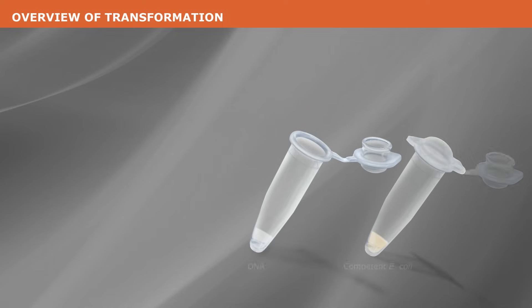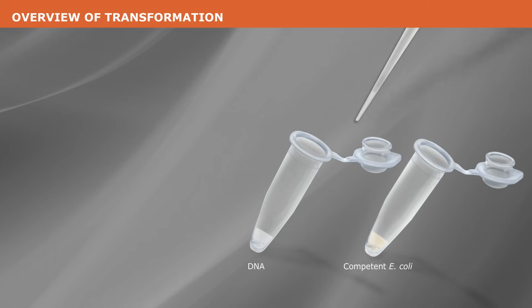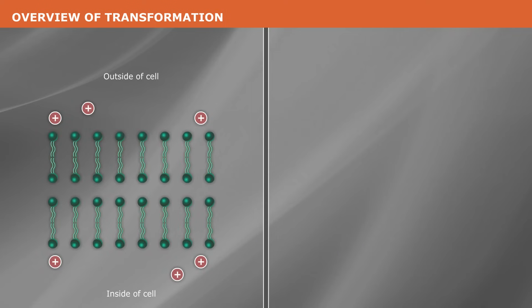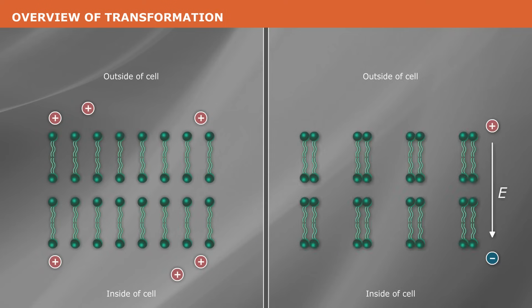Artificial transformation of bacteria involves producing competent cells capable of exogenous DNA uptake. There are two primary methods of artificial transformation used in the laboratory: chemical transformation and electroporation.